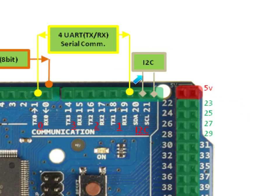The digital pins support I2C communication, which can be configured using the Wire library of the Arduino software. It can be set at pin 20 as the data line and pin 21 as the clock line.